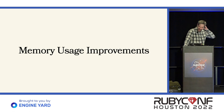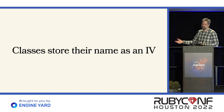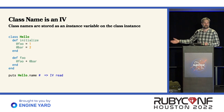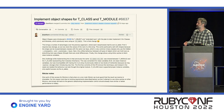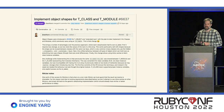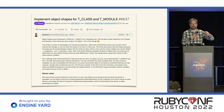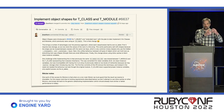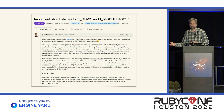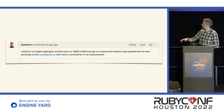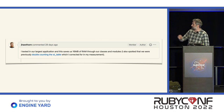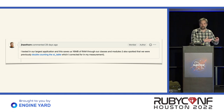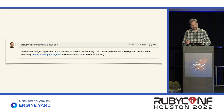Memory usage improvements: classes store their names as instance variables, so if you do Hello.name, that's read as an instance variable. John Hawthorne was able to convert classes to use object shapes as well — he sent a patch to do this. All classes have a different class, which is a meta class, so we had to duplicate all this information among all classes. But since classes can use shapes now, we know that all of these classes have the same shape and we're able to amortize that cost. He found in his application — I think this is GitHub's application — they were able to save about 16 megabytes of memory just on this one change.